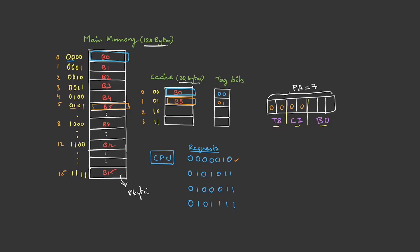Let's take the first request: 0000 0010. The first 3 bits are the block offset, the next 2 bits are the cache index or line number — here it is 00 — so the CPU identifies line 0. Then the tag bits in the physical address are 00 and in the directory the tag bits are also 00. Using a comparator these two are compared, and they match. This means the block we are searching for is present in the cache. Using the block offset it goes inside the block and identifies the exact byte position.